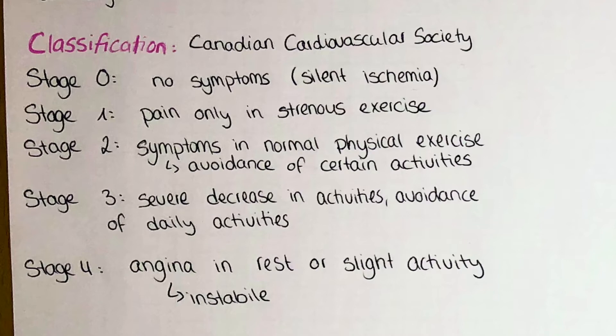Stage 2 presents with symptoms during normal physical activities, which the patient will progressively avoid to not experience the discomfort associated with angina. Stage 3 is defined as chest pain in daily activities with increased avoidance of such. In stage 4, the most severe case, patients will experience symptoms even at rest — we speak of unstable angina. What unstable angina is and how it differs from stable angina we will talk about more later.